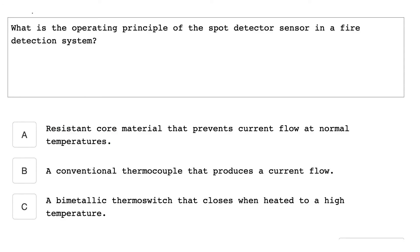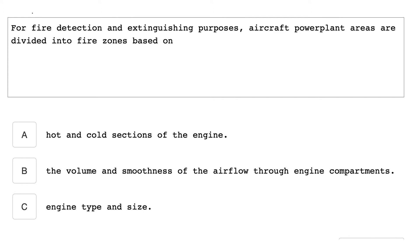What is the operating principle of the spot detector sensor in a fire detection system? A bi-metallic thermal switch that closes when heated to a high temperature. For fire detection and extinguishing purposes, aircraft fire plant areas are divided into fire zones based on the volume and smoothness of the airflow through the engine compartment.